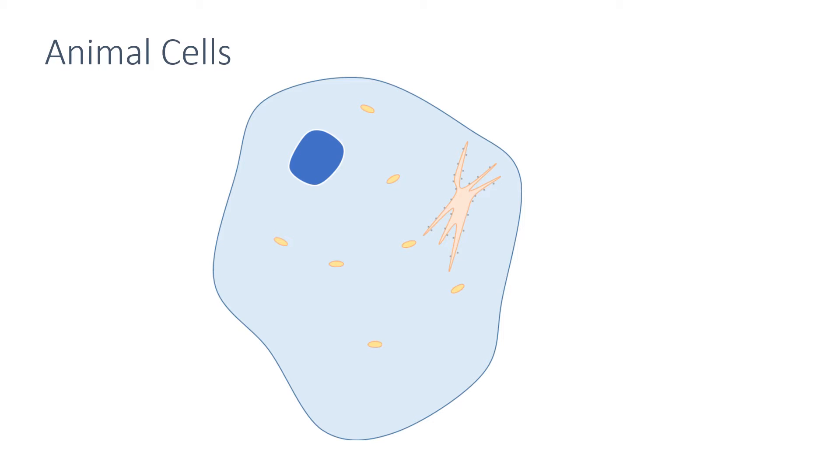Most animal cells contain the following parts: a nucleus, a cell membrane, cytoplasm, ribosomes, and mitochondria.